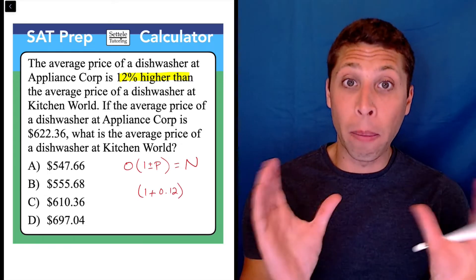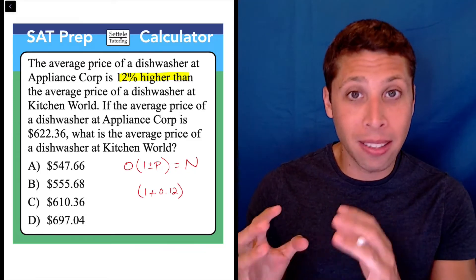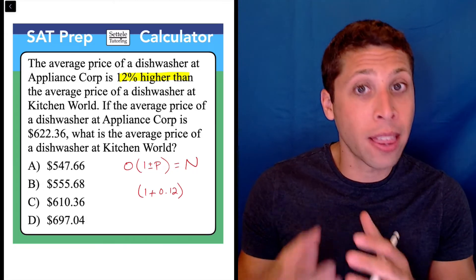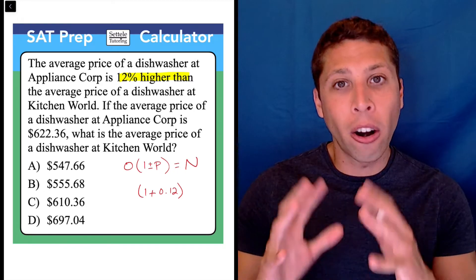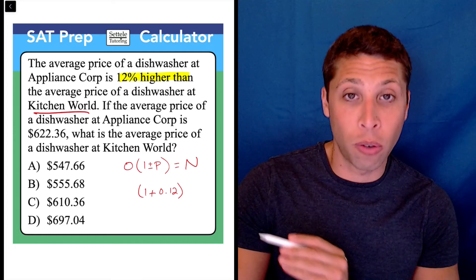The other piece is where most people mess up. Whether you use my formula or a different one, this is the thing that people mess up, is they mess up what are we taking a percentage of. They try to outthink the question. But the question is very clear here that our original amount, the amount that we're basing this change upon is Kitchen World.